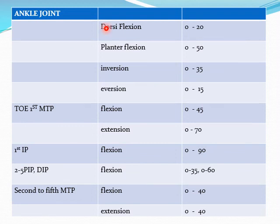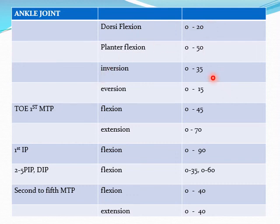Ankle joint movements are dorsiflexion, plantar flexion, inversion, and eversion. Dorsiflexion: 0 to 20 degrees. Plantar flexion: 0 to 50 degrees. Inversion: 0 to 35 degrees. Eversion: 0 to 15 degrees.